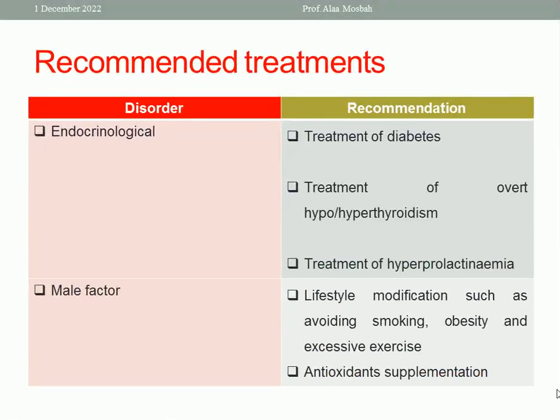For endocrinological causes such as diabetes and thyroid dysfunction — either hypothyroidism or hyperthyroidism — hypothyroidism is more commonly associated with recurrent pregnancy loss. If proven, both hypo- and hyperthyroidism should be treated. Control of blood glucose in diabetes is also an important factor.